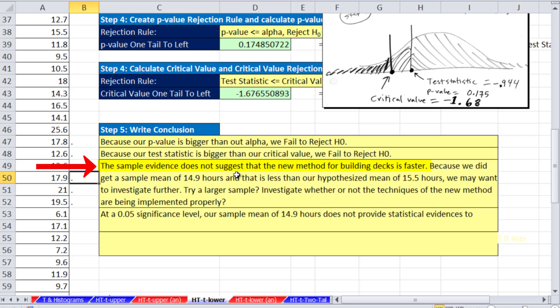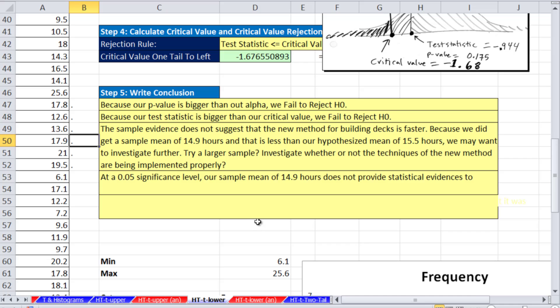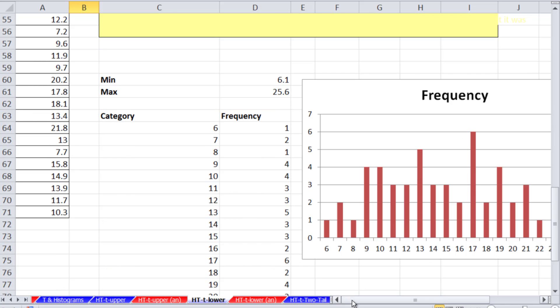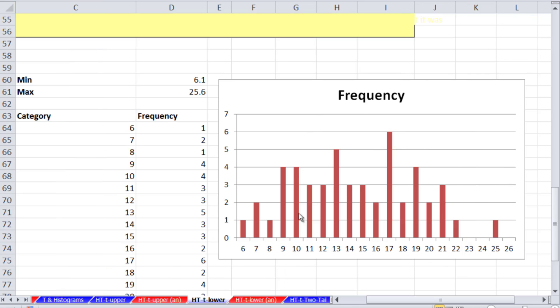The sample evidence does not suggest that the new method for building decks is faster. Because we did get a sample of 14.9 hours, and that's less than our hypothesized mean of 15.5 hours, we may want to investigate further. Like maybe we want to try a larger sample.